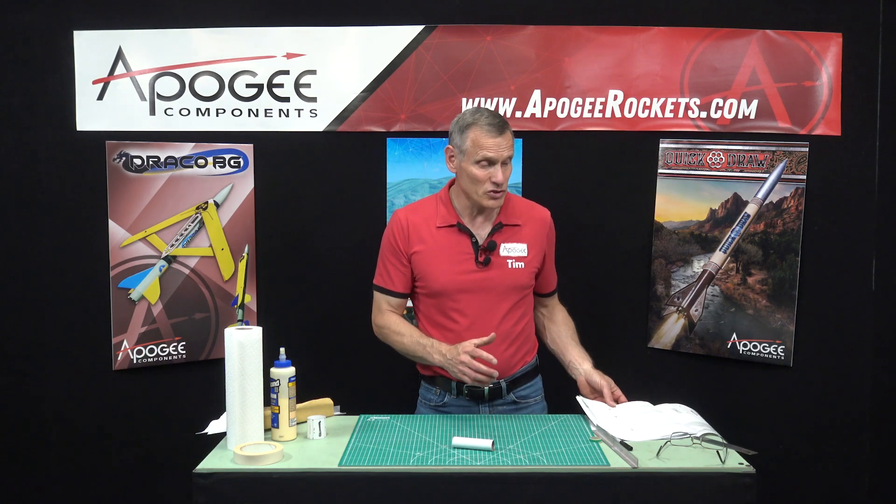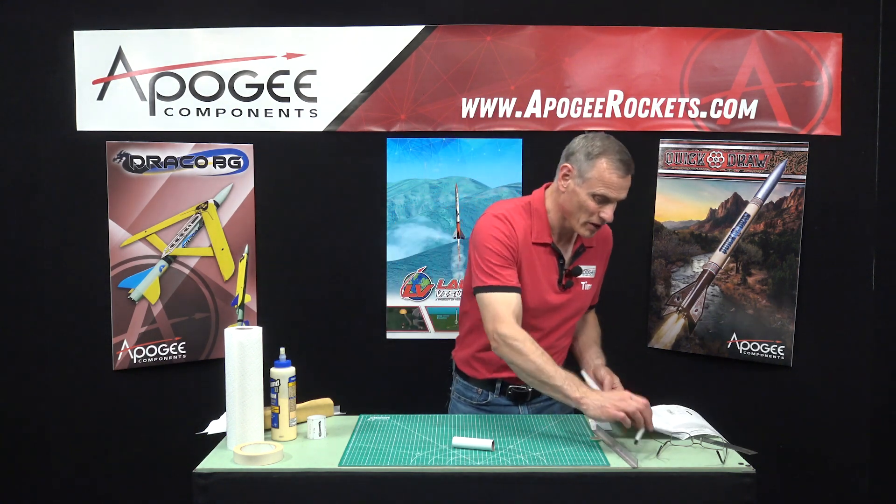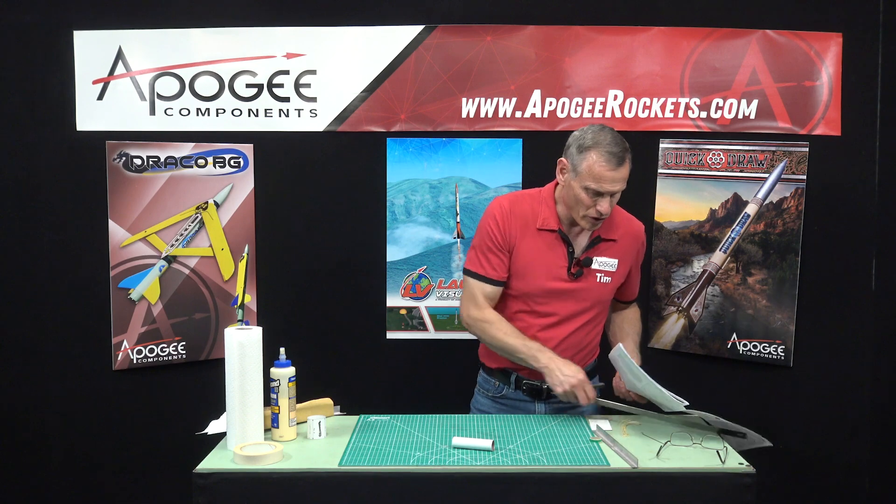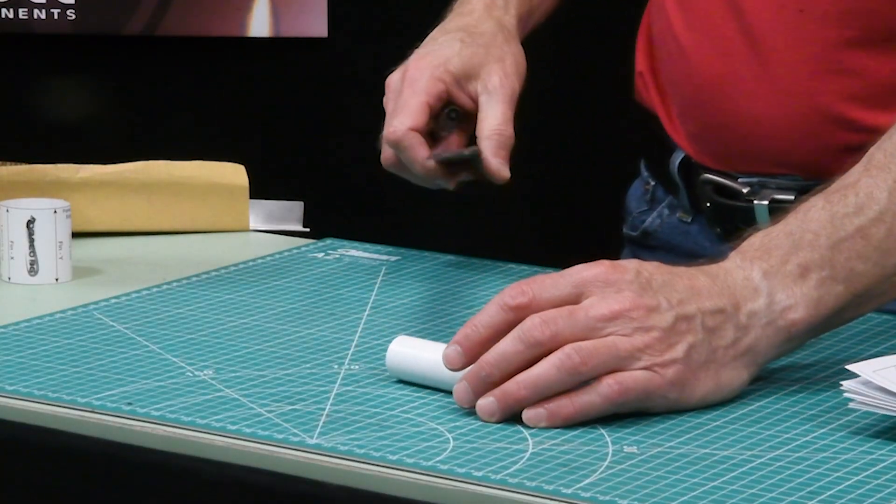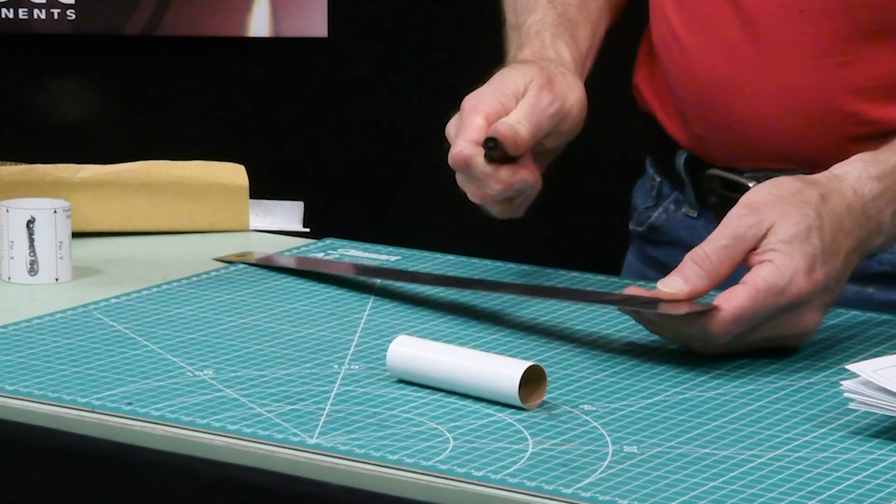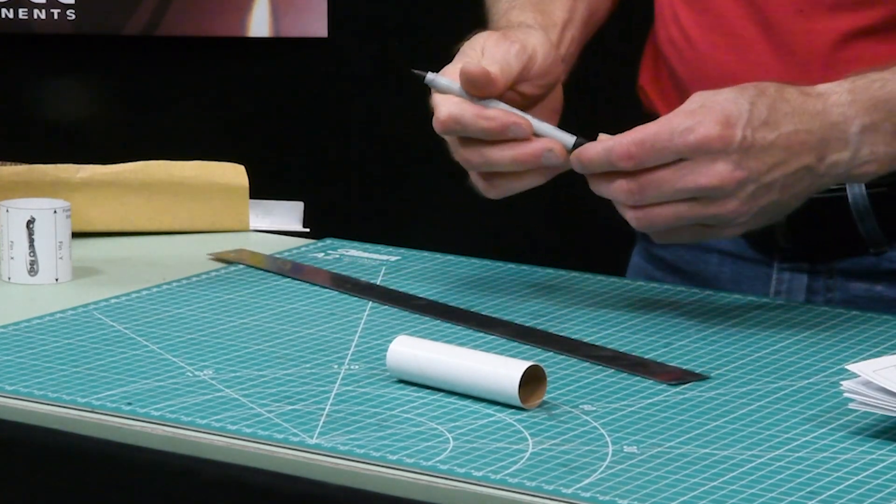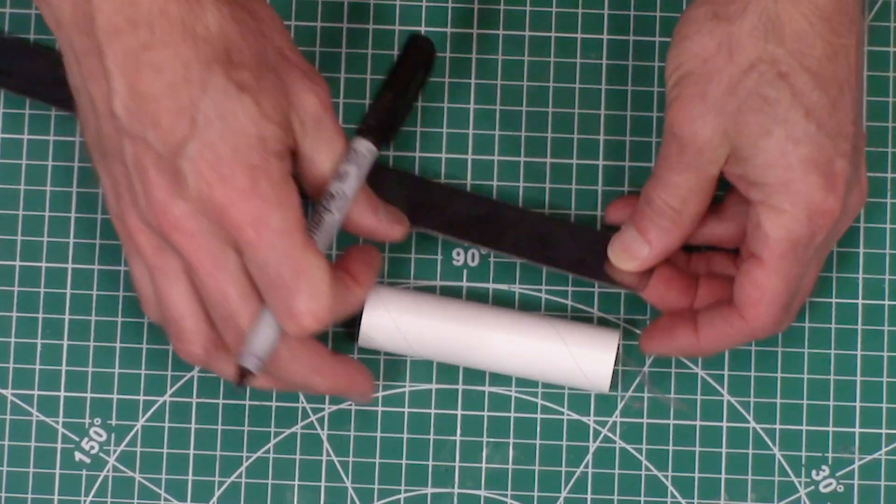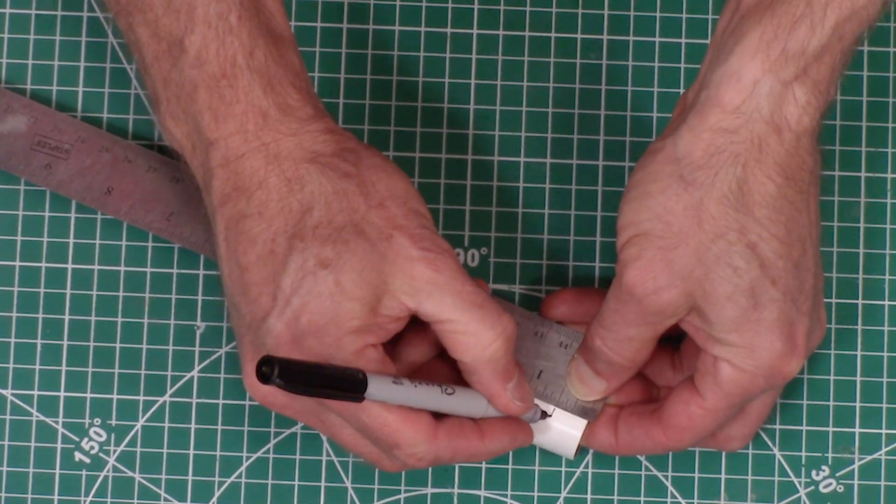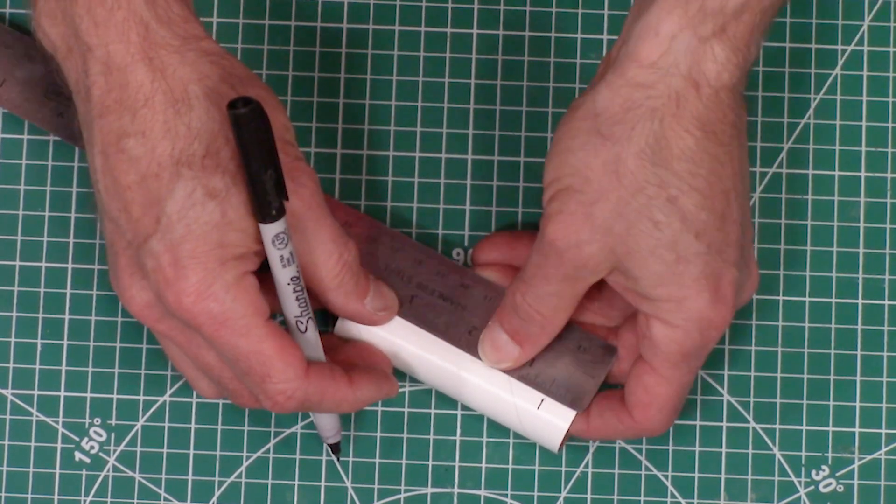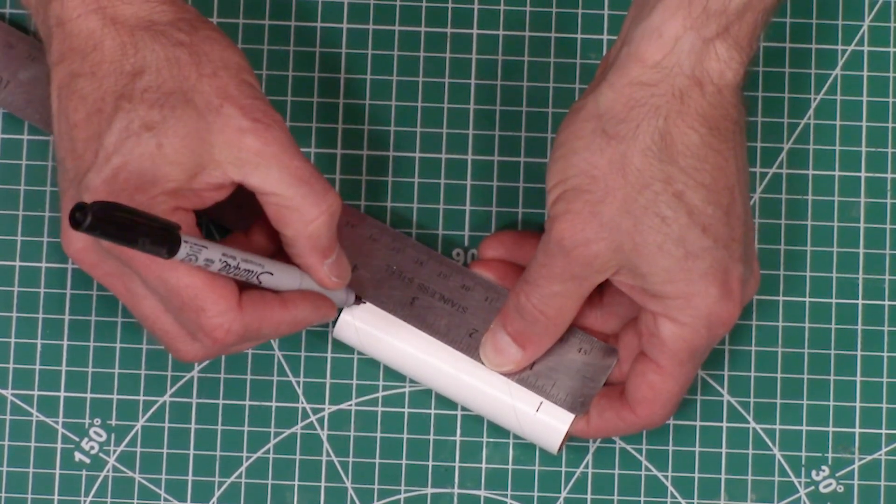This is step one of the instructions. You'll need your ruler and the motor mount tube. We need to mark it a half inch from both ends and then a quarter inch from one of the ends. I'm using a pen so you can see it, but you should probably use a pencil.